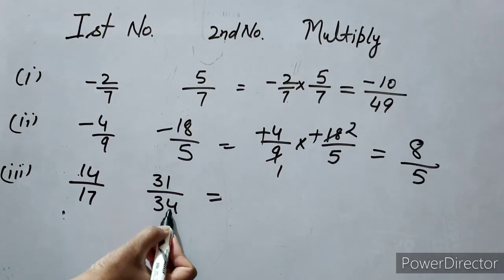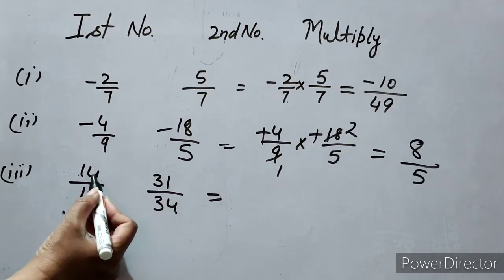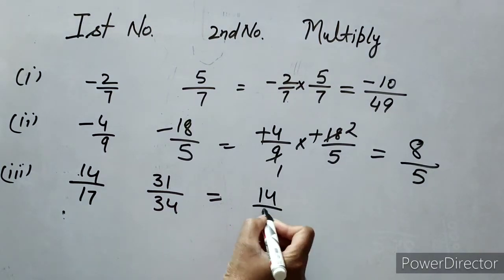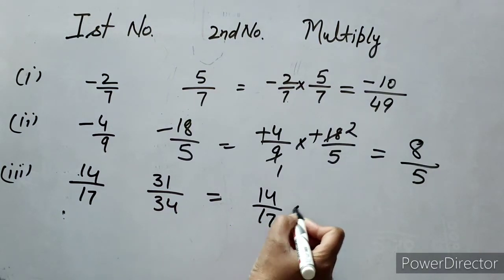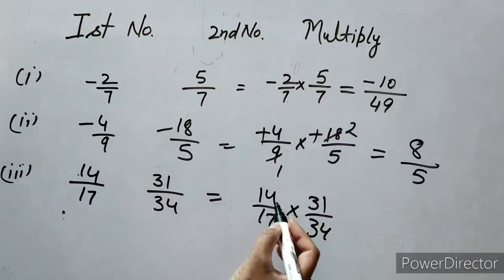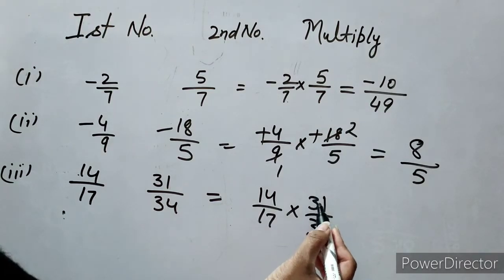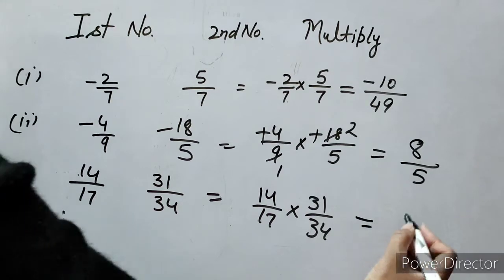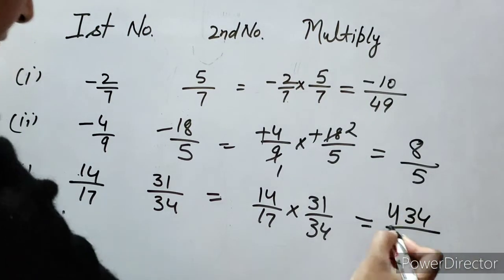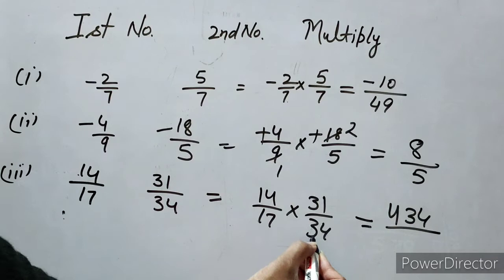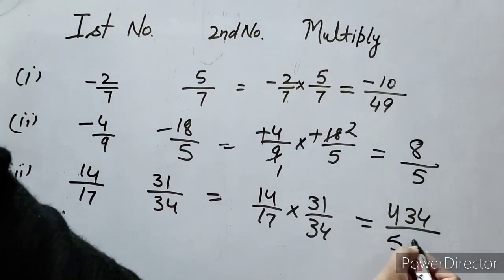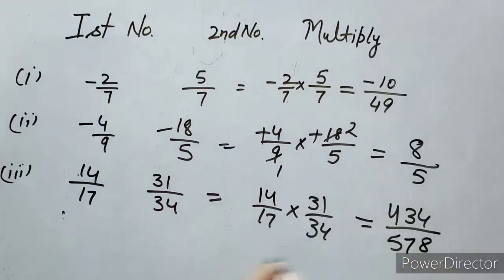Let's take one more example: 14 over 17 multiplied by 31 over 34. Numerator multiplied by numerator: 14 multiplied by 31 gives 434. Denominator multiplied by denominator: 17 multiplied by 34 gives 578. So the answer is 434 over 578.